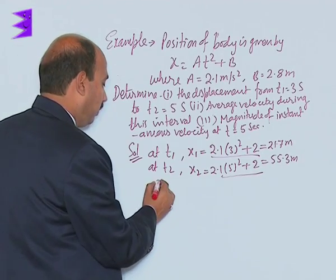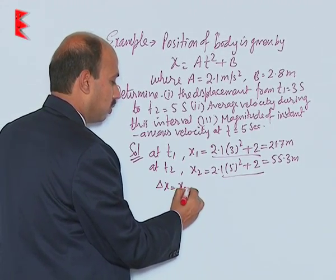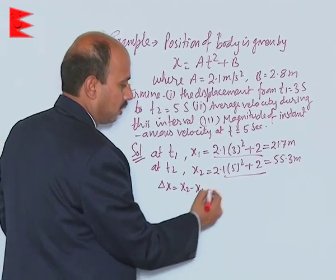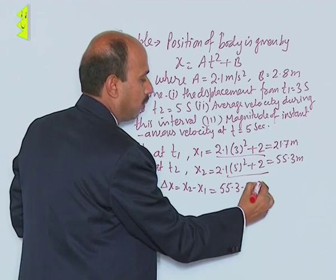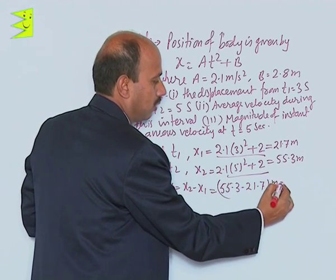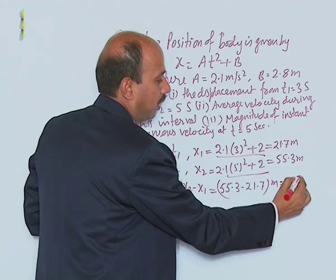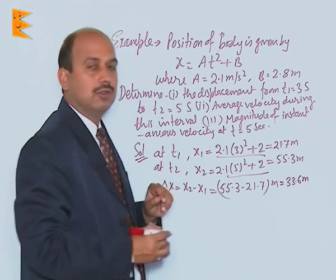Now, if you want to calculate the displacement, Δx = x₂ - x₁ = 55.3 - 21.7 meter = 33.6 meter. This is the displacement.